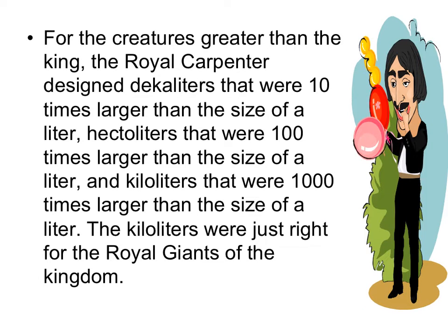For the creatures greater than the king, the royal carpenter designed dekaliters that were ten times larger than the size of a liter, hectoliters that were one hundred times the size of a liter, and kiloliters that were one thousand times the size of a liter. The kiloliters were just right for the royal giants of the kingdom.